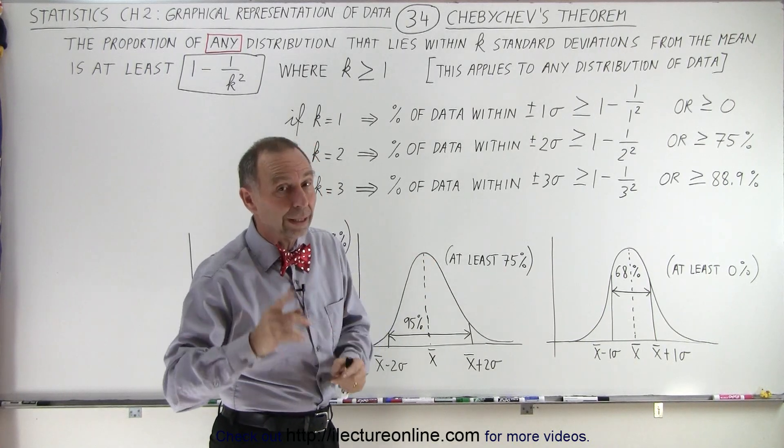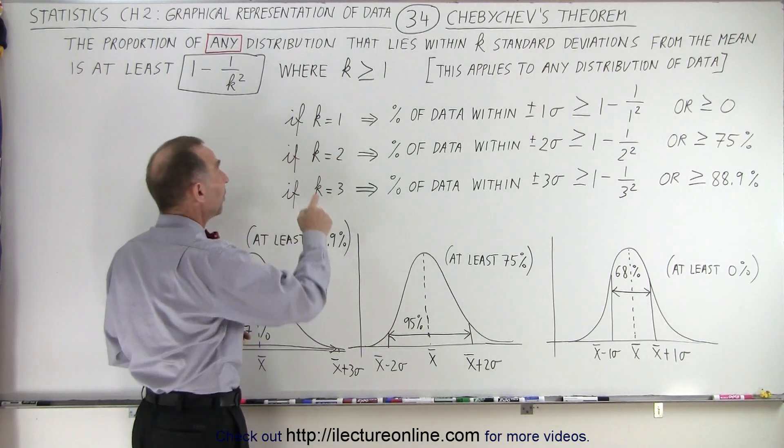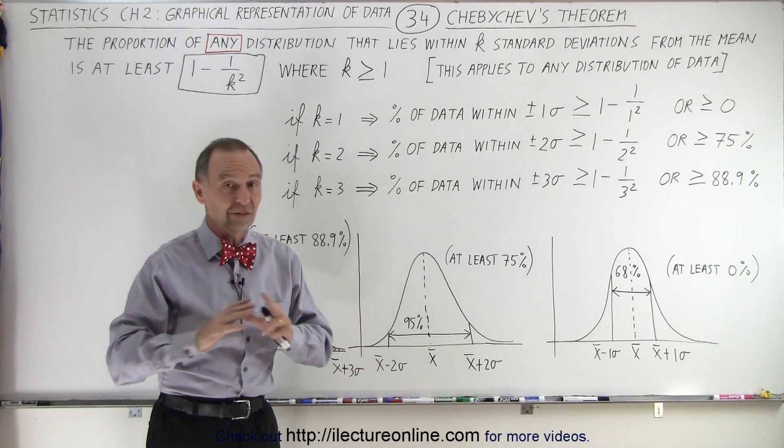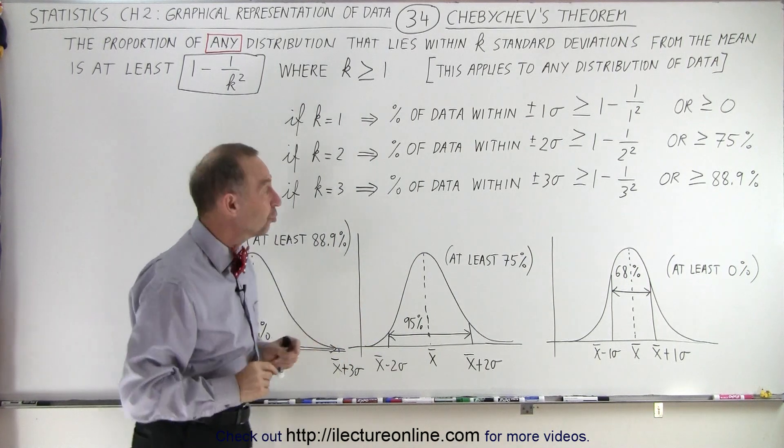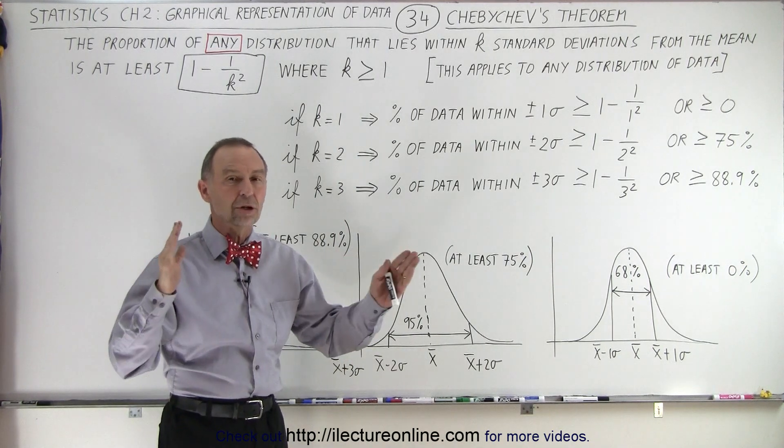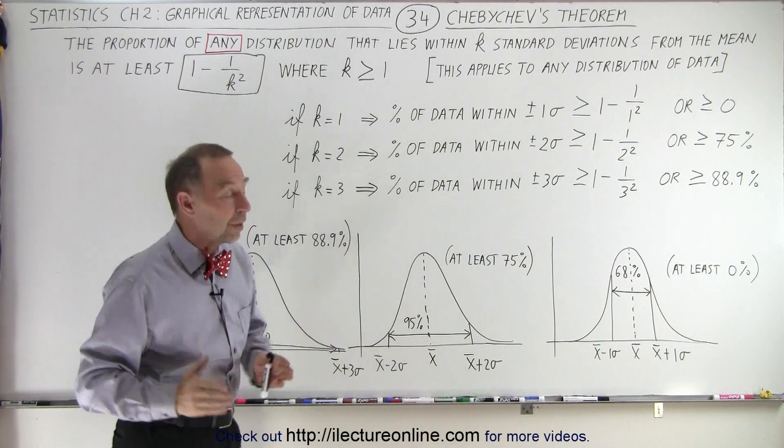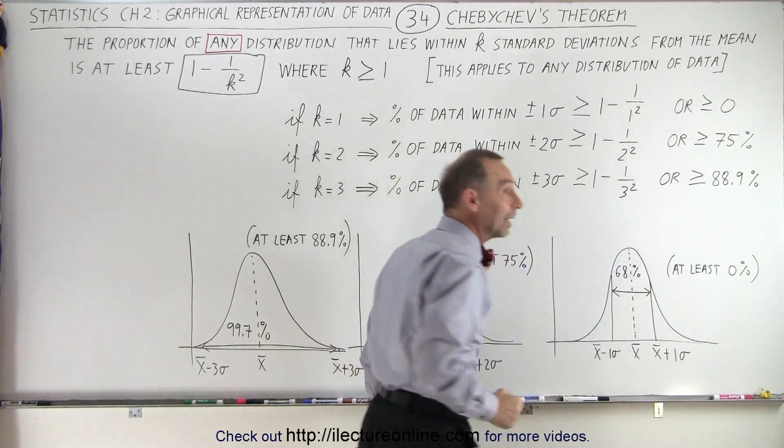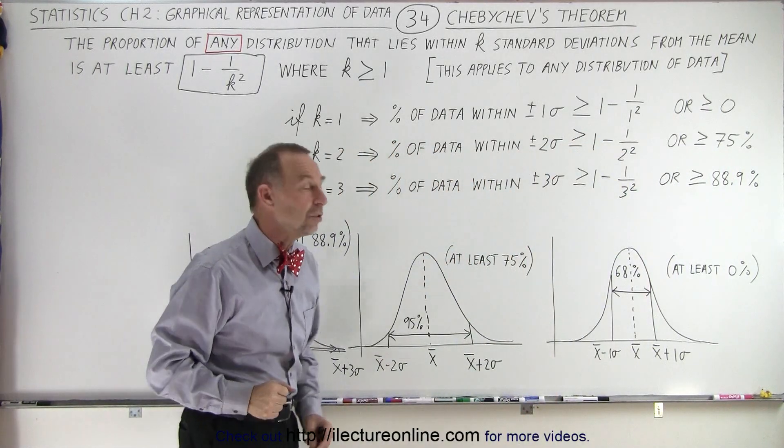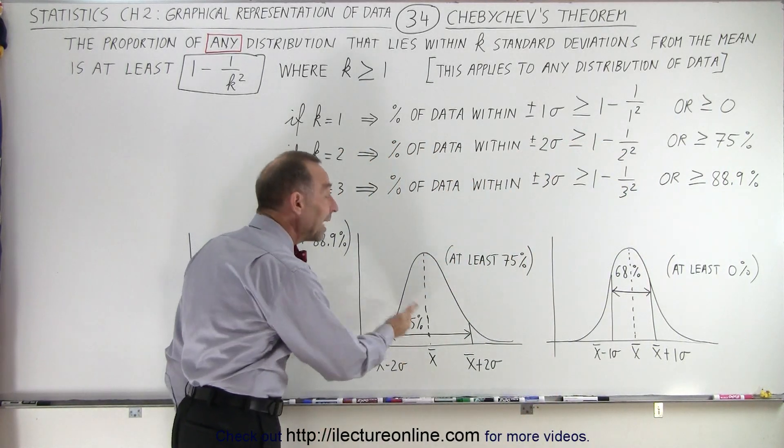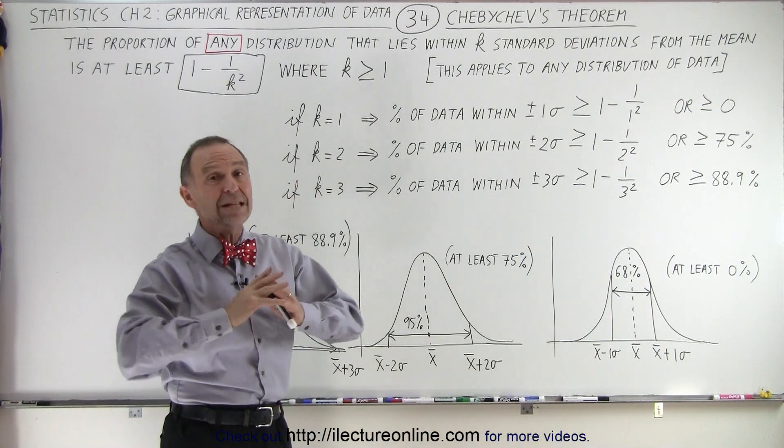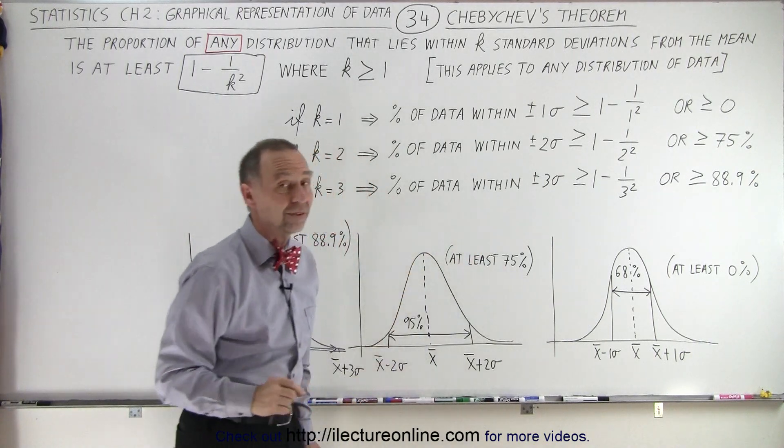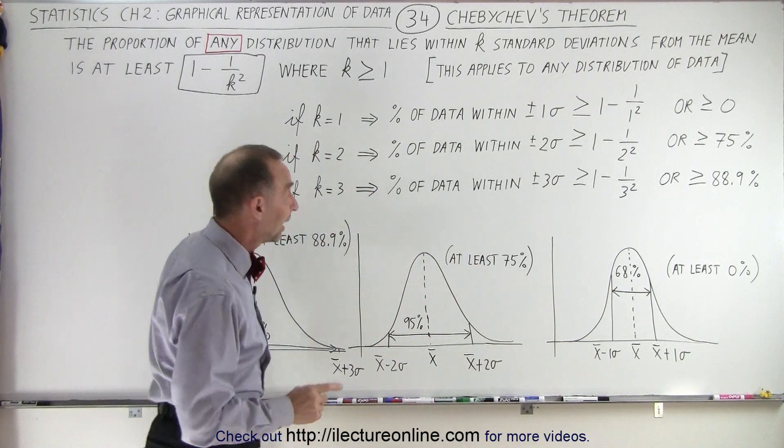But anything over one does make a difference. For example, if k equals two, if we have any random distribution, we can be assured according to Chebyshev's theorem that at least 75% of the data will fall within plus or minus two sigma. Normally it should be 95% for a normal distribution, but for any distribution it will be at least 75%, and that's really important.